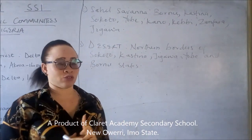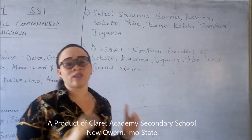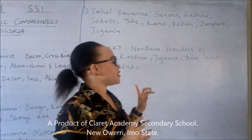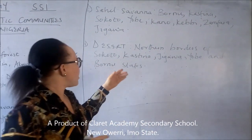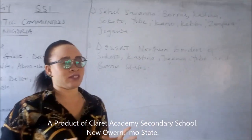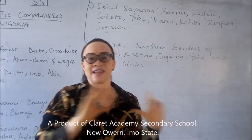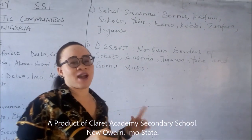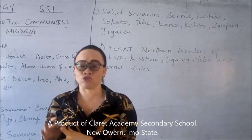Now we have the desert region. The desert region is a region with very low rainfall. You can find it in the northern borders of Sokoto, Katsina, Jigawa, Yobe, and Borno states. This area has little or no rainfall, and you can find animals like camel and plants like cactus there.